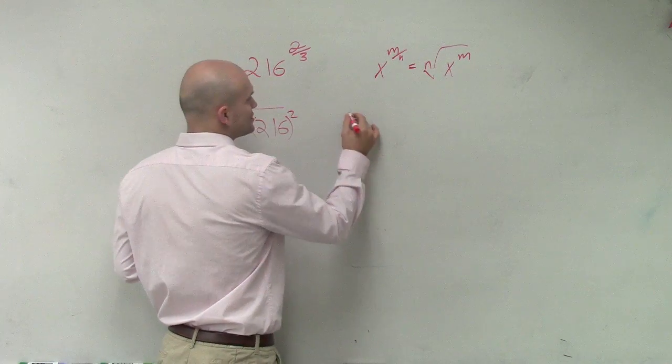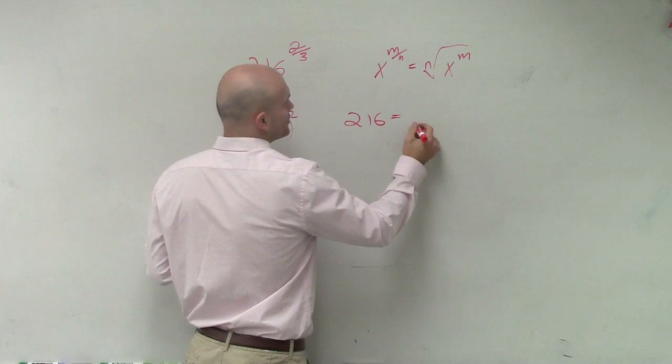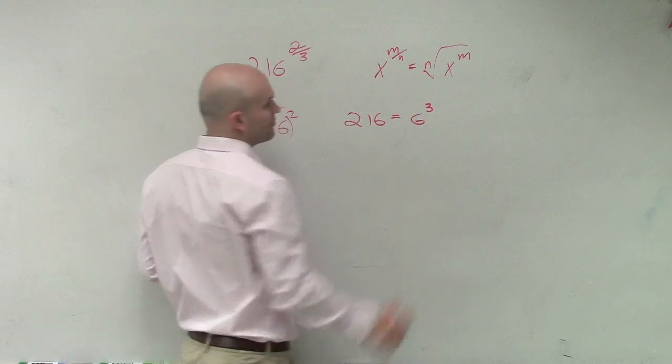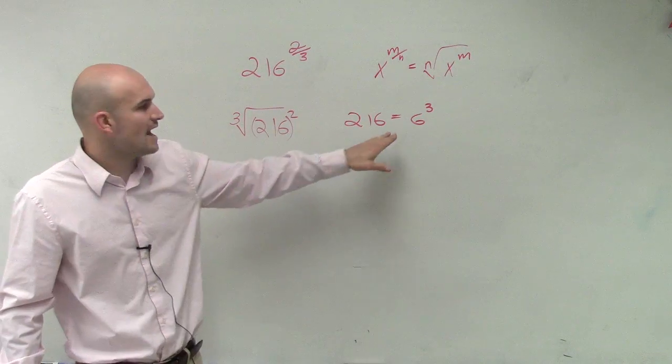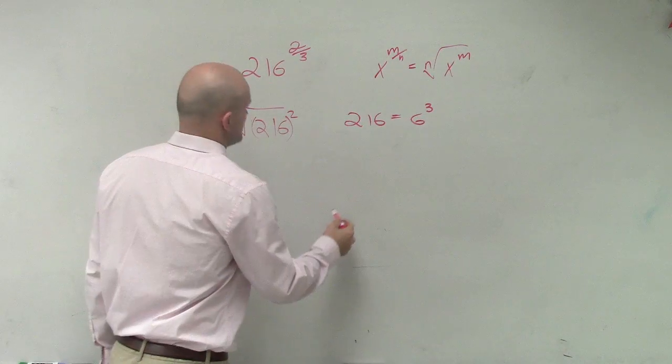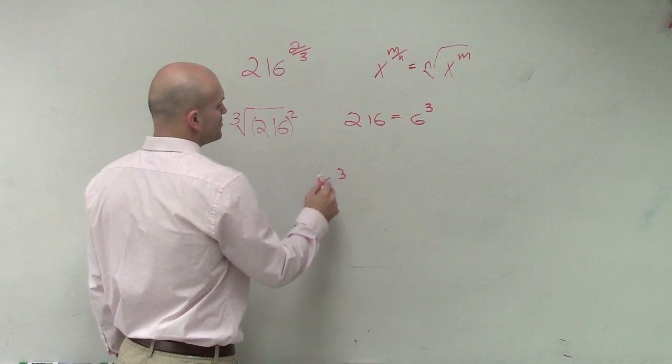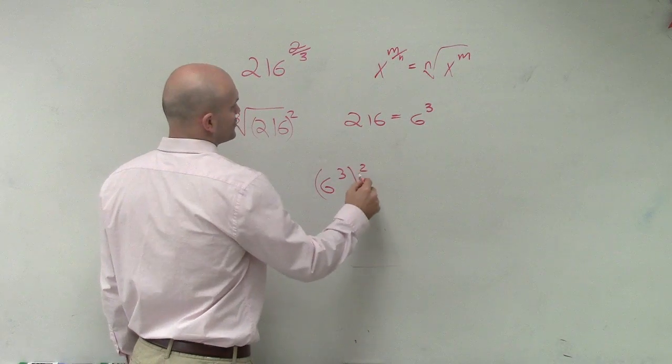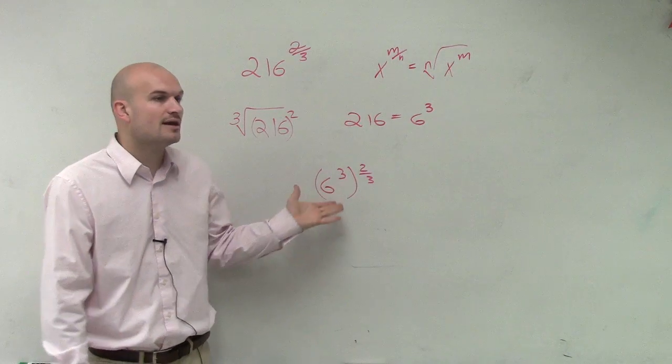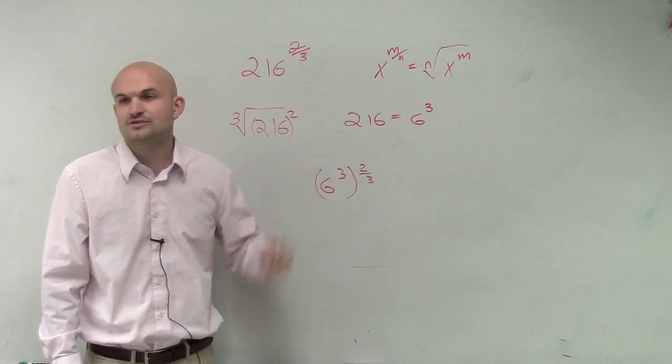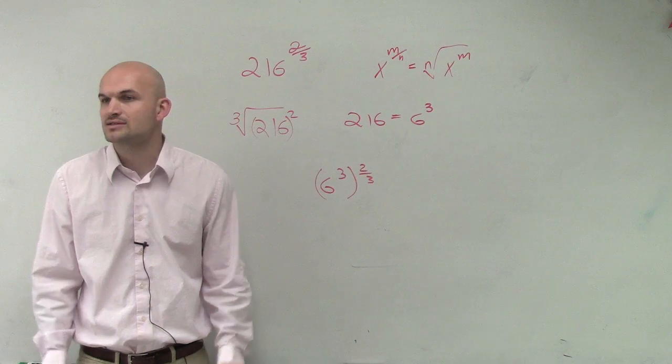So what I could do is rather than writing 216, I can write 6 cubed. So therefore, now I'd have 6 cubed raised to the 2 thirds powers. And then what do you do when you take a base raised to an exponent and then raise it to another exponent? You're going to do what with the exponents? Anybody remember?